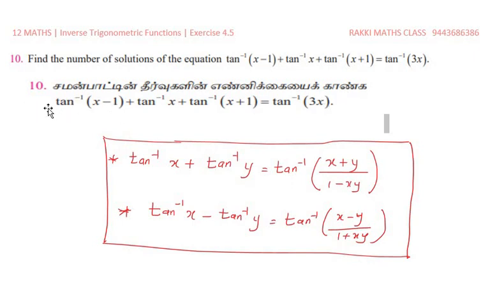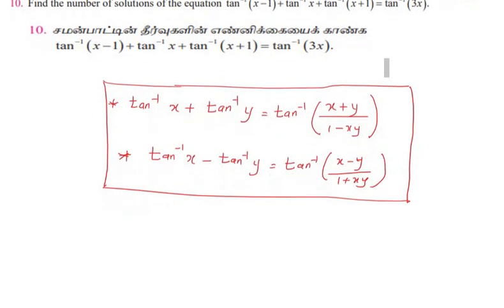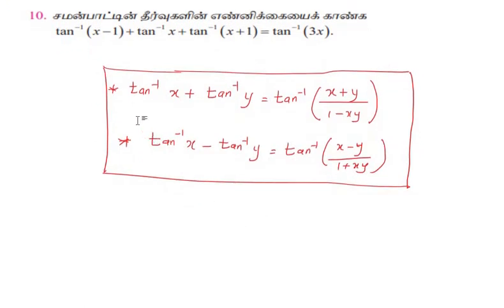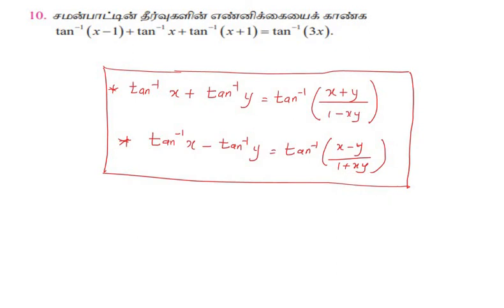tan inverse of (x minus 1) plus tan inverse of x plus tan inverse of (x plus 1) equal to tan inverse of 3x. We recall two formulas: tan inverse of x plus tan inverse of y equals tan inverse of (x plus y) divided by (1 minus xy), and tan inverse of x minus tan inverse of y equals tan inverse of (x minus y) divided by (1 plus xy).